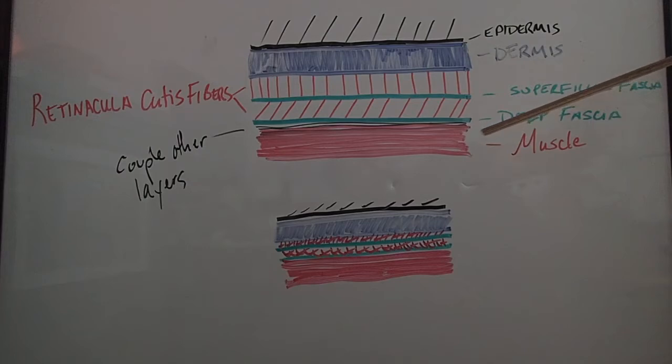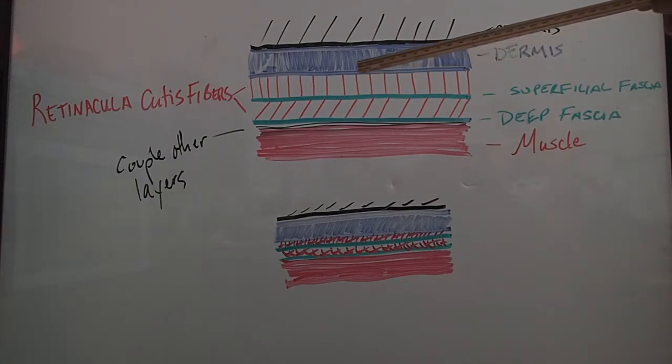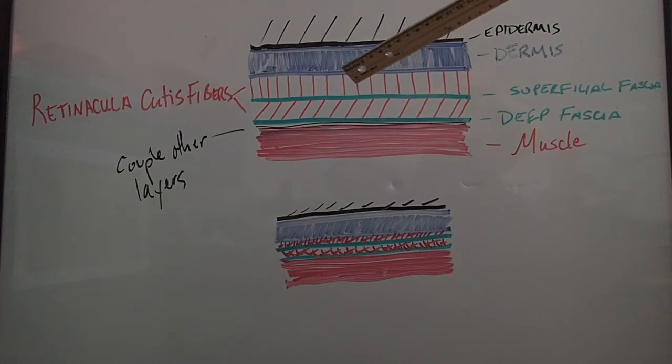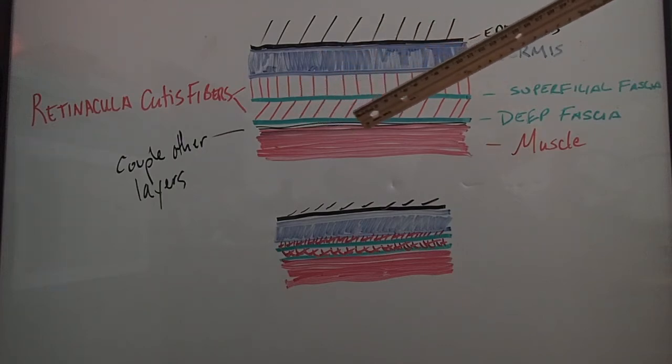Below that we have your deep fascia, and below that we have muscle. These layers in between are your retinacula cutis fibers, it's a fuzzy substance that builds the layers in between your superficial and deep fascia and also your dermis. Fat also is deposited in between these layers. You do have a couple more layers in between the deep fascia and the muscle, but we're not going to worry about those ones today.